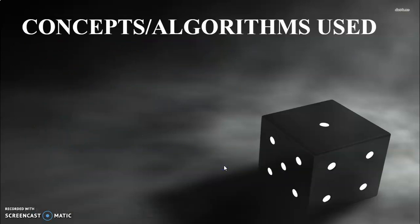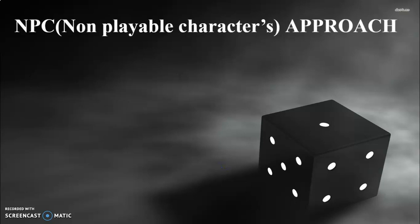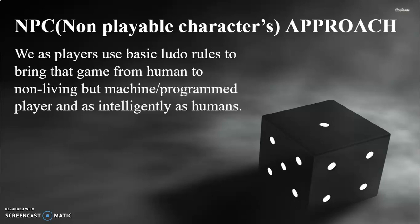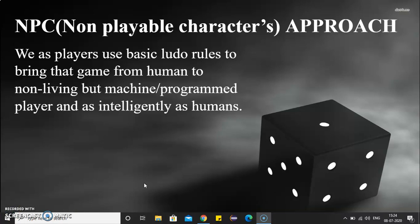Now let's discuss the concepts and algorithms used. The base is the NPC approach, it employs Q-learning, and also randomization. The NPC, or non-playable character, approach here differs from the previous video's context. In Ludo King, we use basic Ludo rules to bring the game from a human player to a machine or program player as intelligently as a human. In simple words, your selected color or token has your brain and acts as the NPC of this game.